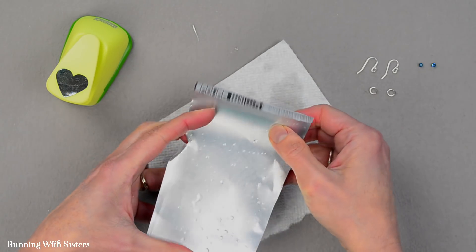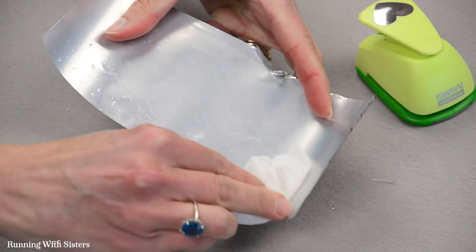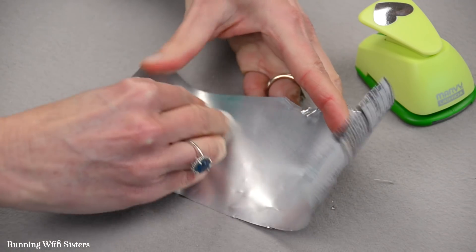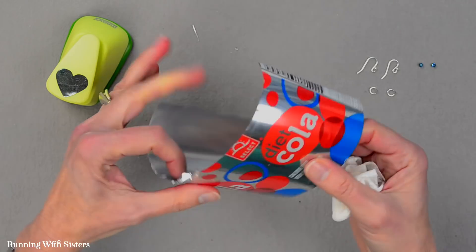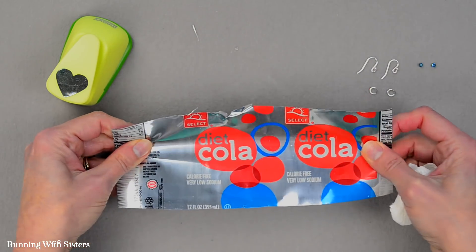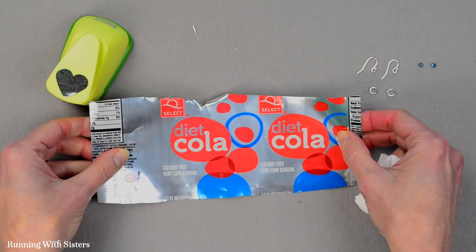And now what I can do is take my paper towel and just wipe out a little bit of water that's left in there from when I washed out my can. And there we have a nice big piece of decorated tin from our soda can.